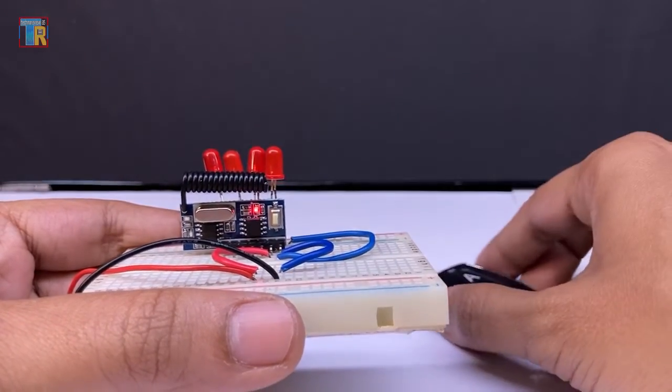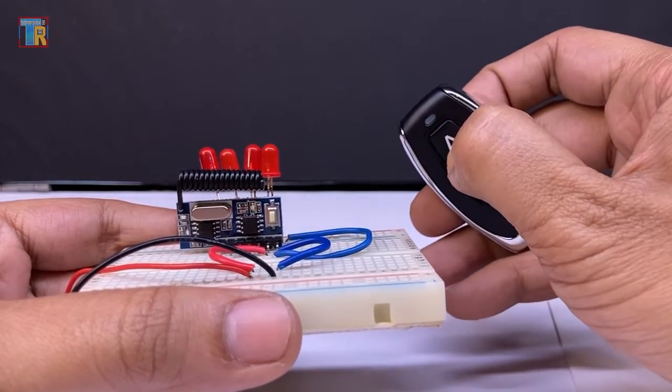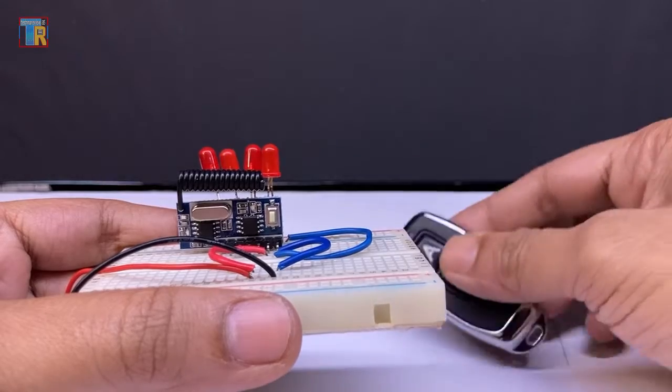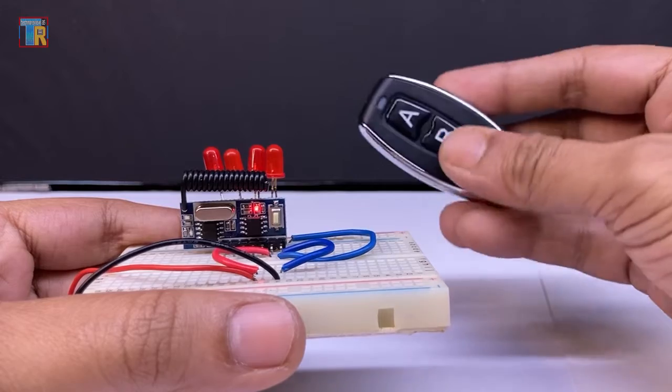Then pressing a button on the remote. Once more pressing the learning button and now pressing B on the remote. If your remote has four buttons you can repeat this process four times.